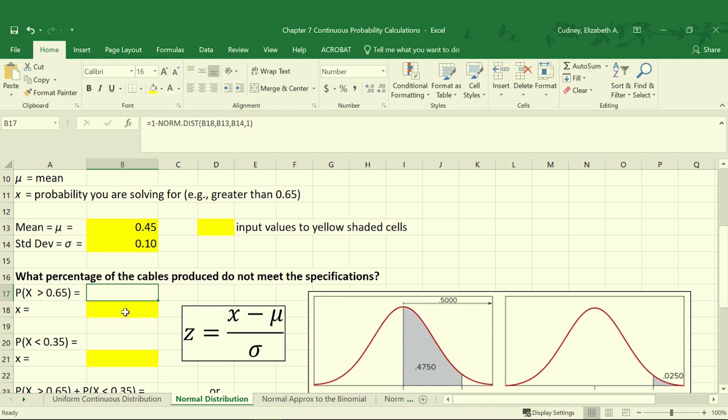To solve for this probability, we're going to start by inputting our value that we're solving for in cell B18. Since we're looking for the probability that's greater than 0.65, we're going to input that value into cell B18. Then we're going to solve for the probability using one of the Excel functions. Since we're looking for greater than a value, we're going to use 1 minus our NORM.DIST function. That gives us our value to the right of the curve.